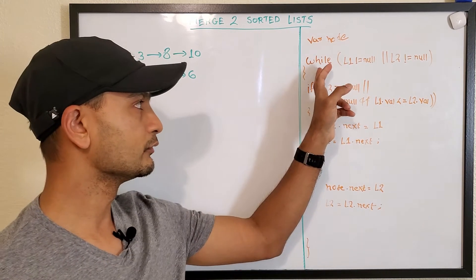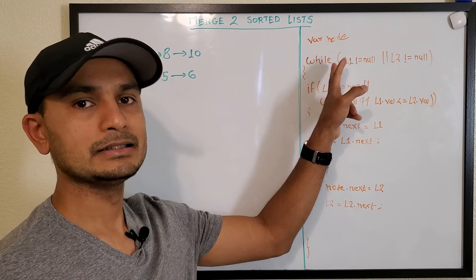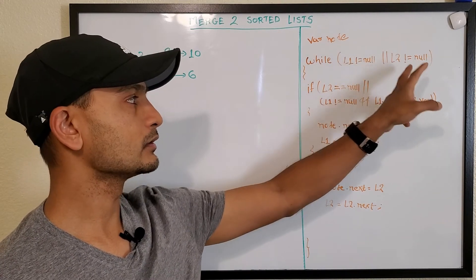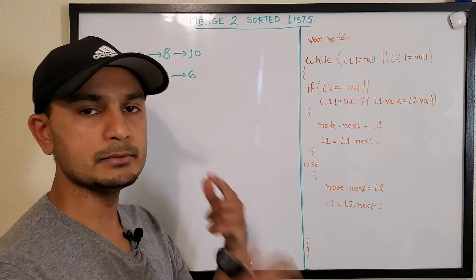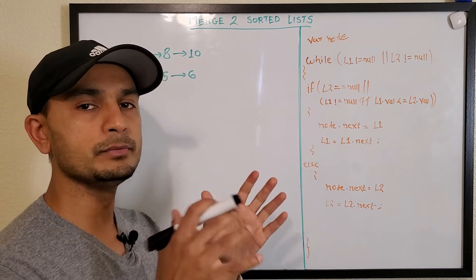What we're going to do is a while loop till either of the lists, or like till both of the lists are null. So keep looping and finish looping when both the lists are done.